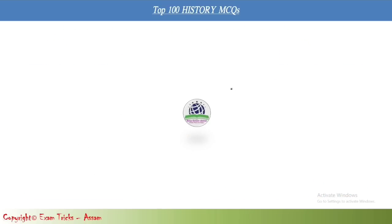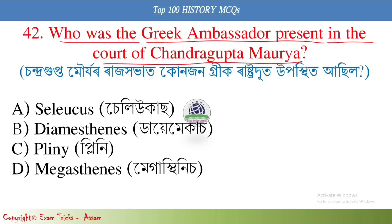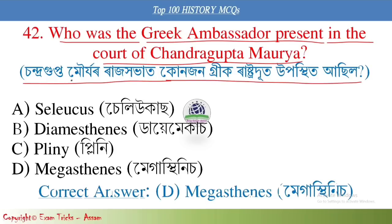Next question: Who was the Greek ambassador present in the court of Chandra Gupta Maurya? The answer is Megasthenes. Megasthenes was the Greek ambassador in Chandra Gupta Maurya's court.